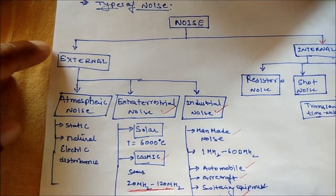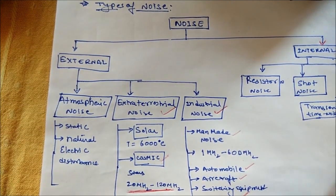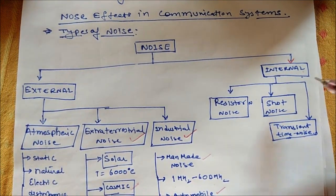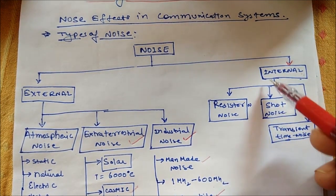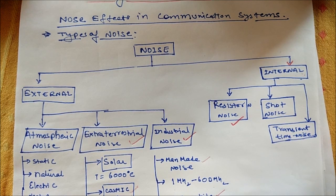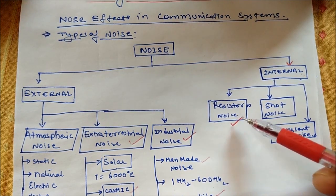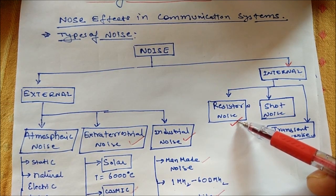So we have studied external noise, its types, and how it occurs. Now let's move on to internal noise, which is generated within the receiver. The first type under this is resistor noise. Every component — whether it is an amplifier, receiver, or any electronic equipment — has a resistance. The noise generated within the resistor in an electronic circuit is known as resistor noise.